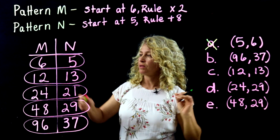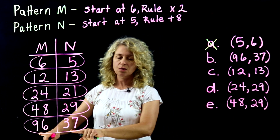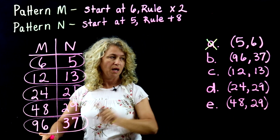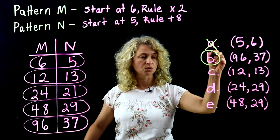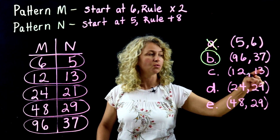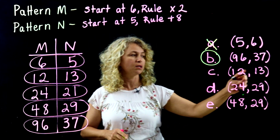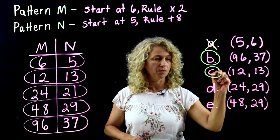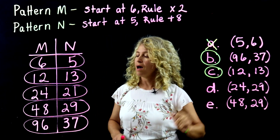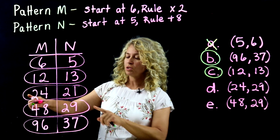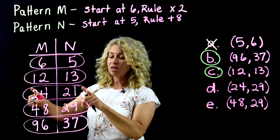Choice (96, 37): those corresponding numbers exist and are in the correct X-then-Y order — that's a correct answer choice. Choice (12, 13): those correspond as the second terms and are in correct order — another answer choice. Choice (24, 29): these numbers appear in the patterns but don't correspond — 24 is the third term and 29 is the fourth term.